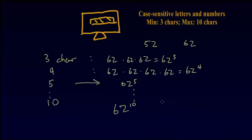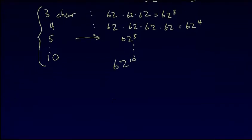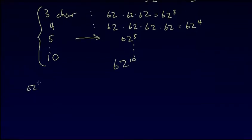So the total number of ways of setting up your computer password is equal to the sum of the number of ways for each individual number of characters, which would be 62³ + 62⁴ + 62⁵ all the way to 62⁹ + 62¹⁰.